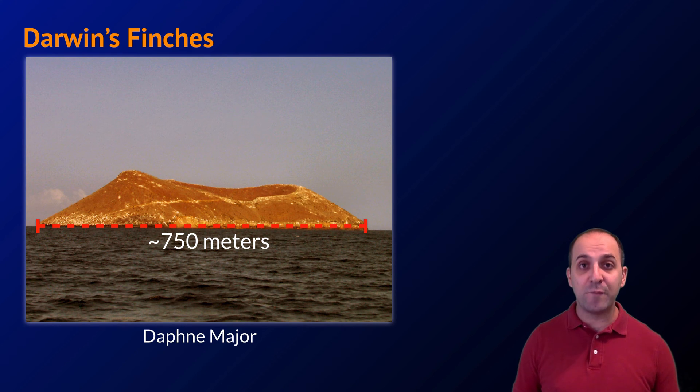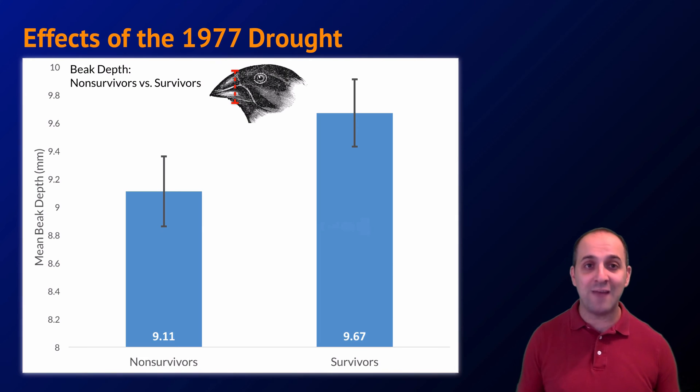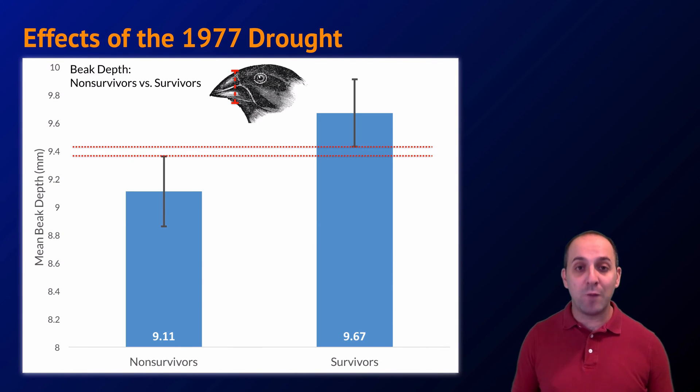We're going to focus on one specific event, which was a drought that occurred on the island in 1977. Comparing the population of medium ground finches that survived the drought to those medium ground finches that did not survive the drought, we can see that there is a statistically significant difference in the beak depth between survivors and non-survivors. That difference is an average of less than one millimeter, but that slightly larger beak made all the difference for the birds that were living on the island at the time, and determined whether or not they would be able to feed themselves and survive, or whether they would perish with the drought. Again here, we can see that natural selection is acting upon the phenotypes of the organisms in the population, determining which members of the population will survive and reproduce, and which ones will not.